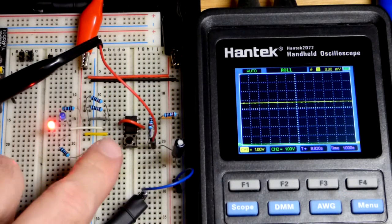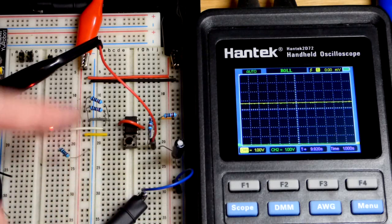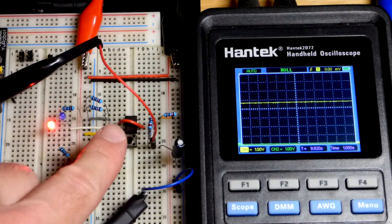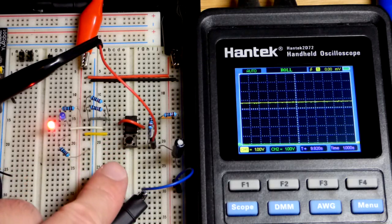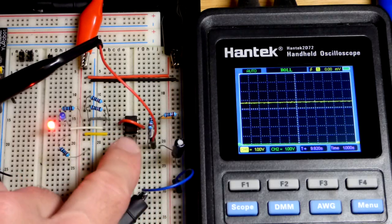In this video we have a 555 timer wired as a flip-flop, but it's different. Instead of giving a signal to one or the other input - we got a trigger up there and a reset down there - instead, the reset is not going to do anything. We just have one button here and a capacitor.